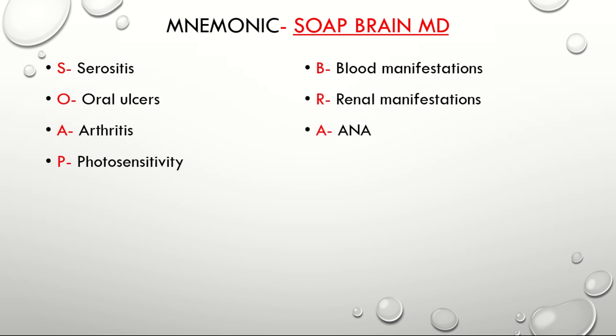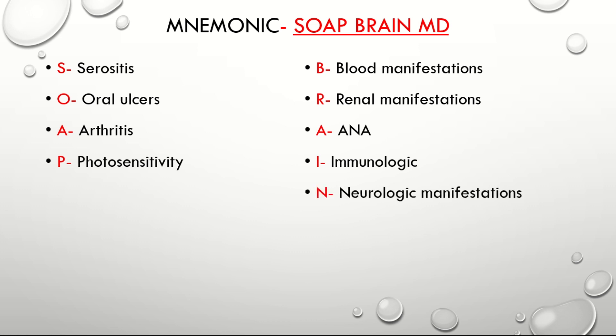A is for anti-nuclear antibodies. I is for immunologic symptoms such as an increase in antibody against double-stranded DNA. N is for neurologic manifestations — psychosis and seizures. M is for malar rash and D is for discoid rash. Thank you.